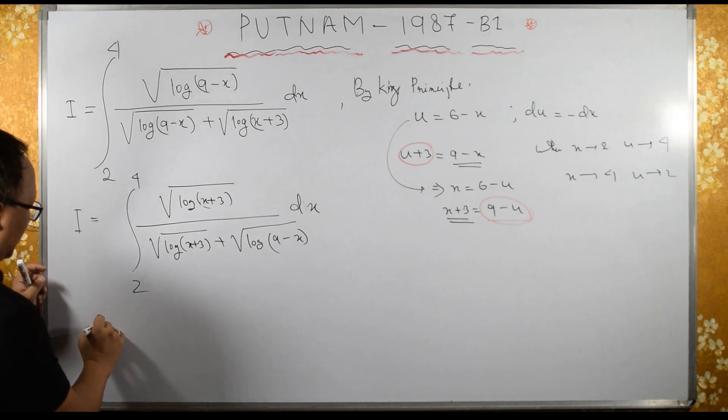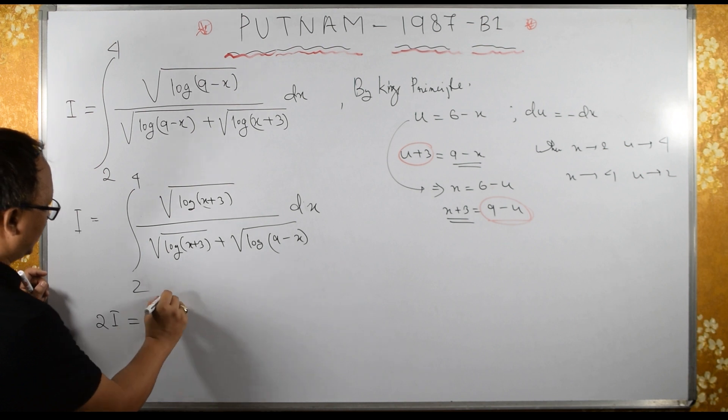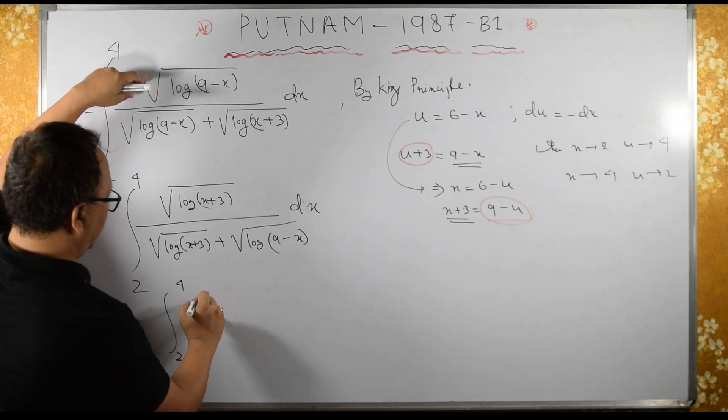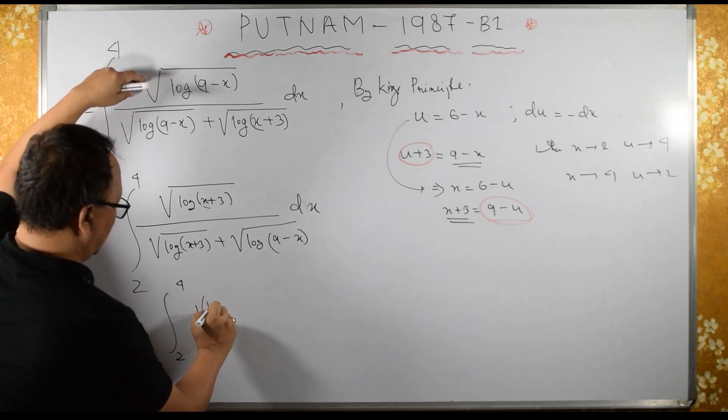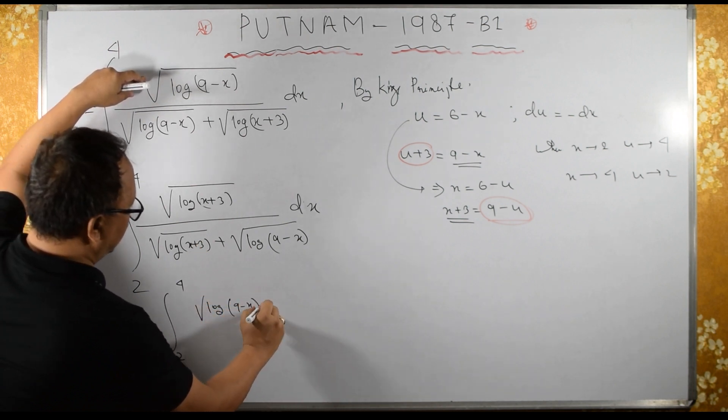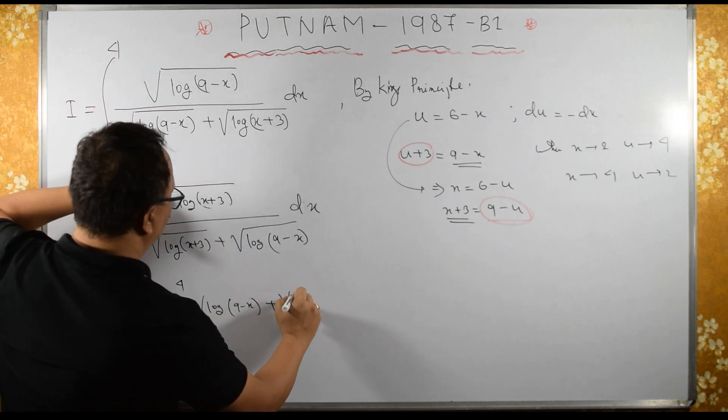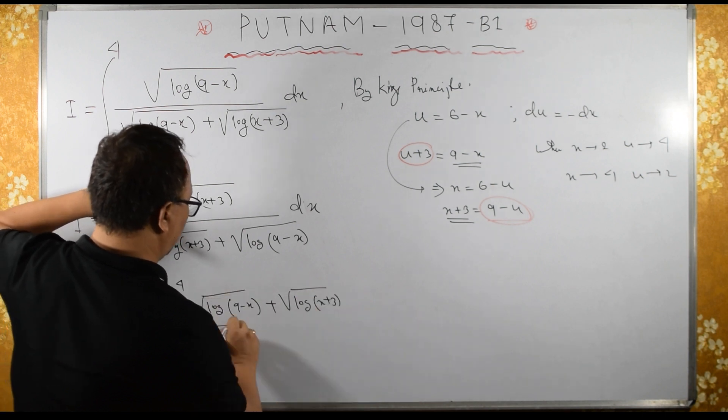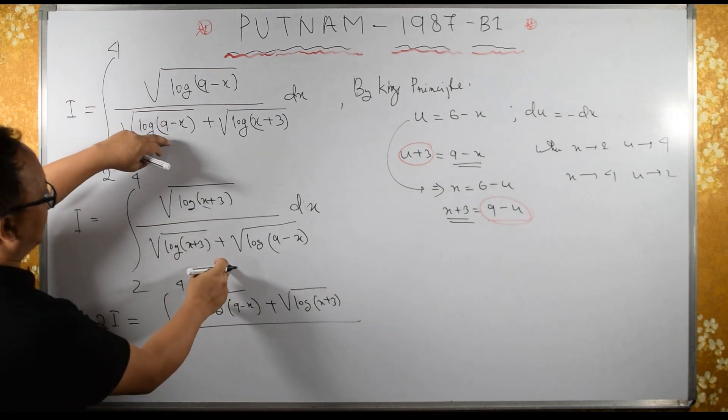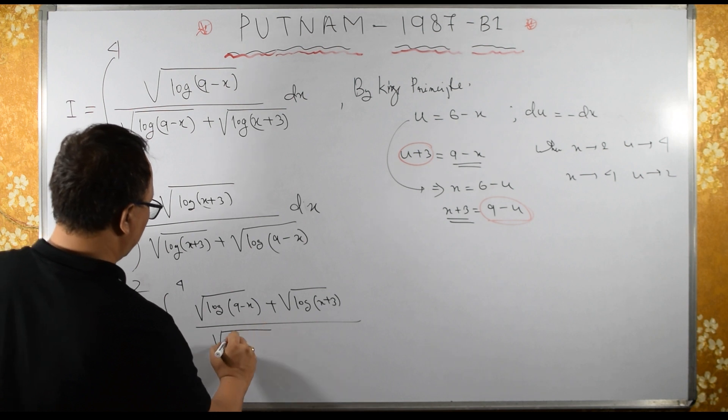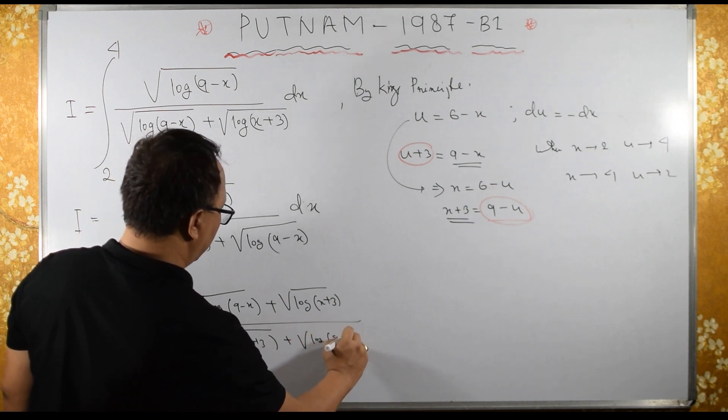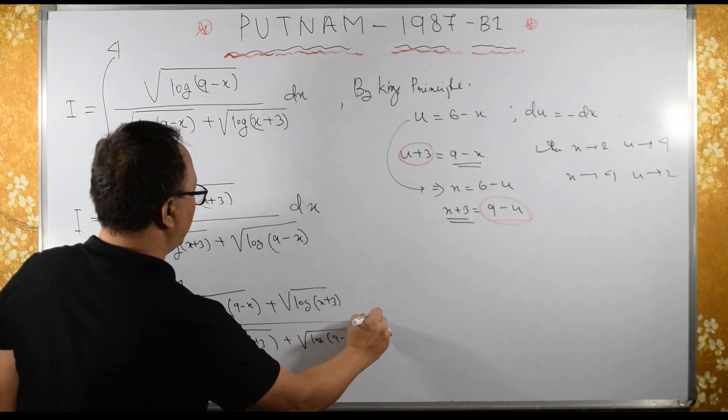I will have on the left hand side, twice i equals integral 2 to 4. Denominator: we have square root of log of 9 minus x plus square root of log of x plus 3, so denominators are same.